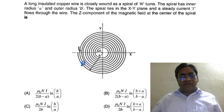The z-component of the magnetic field at the center of the spiral is, options are given.